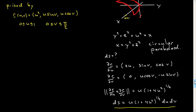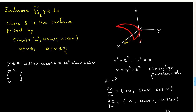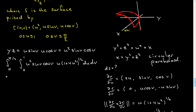Instead, what you were asked to compute is the integral of yz. We have to work out yz in terms of our parametrization: yz equals u sin v times u cos v, which is u² sin v cos v. So our integral is: v from 0 to pi over 2, u from 0 to 1, of u² sin v cos v times ds, where ds is u(1 + 4u²)^(1/2) du dv. You can see that it separates into an integral of sin v cos v dv times an integral of u³(1 + 4u²)^(1/2) du.